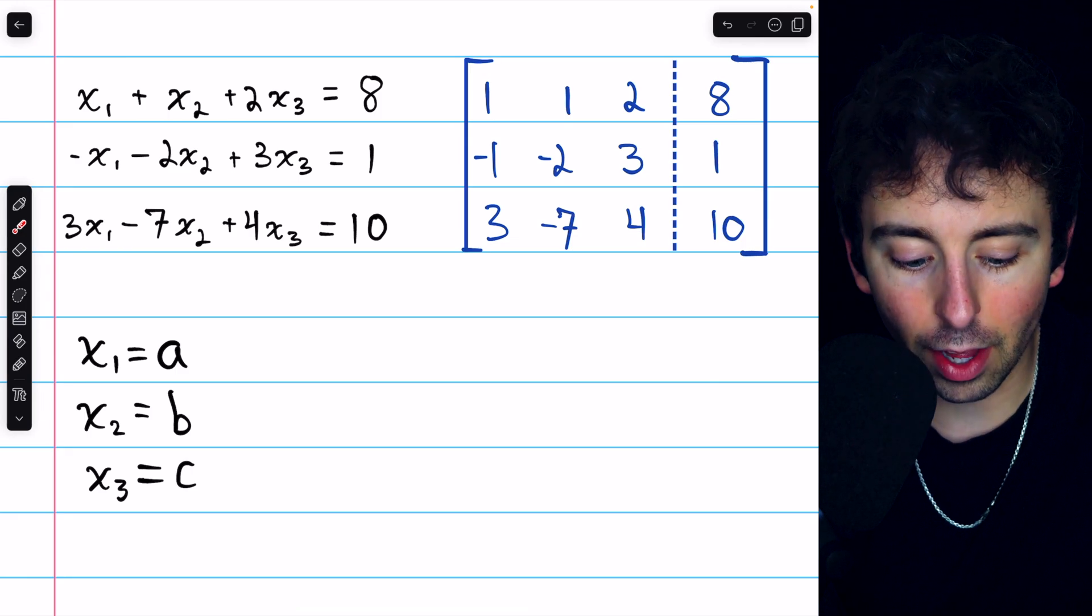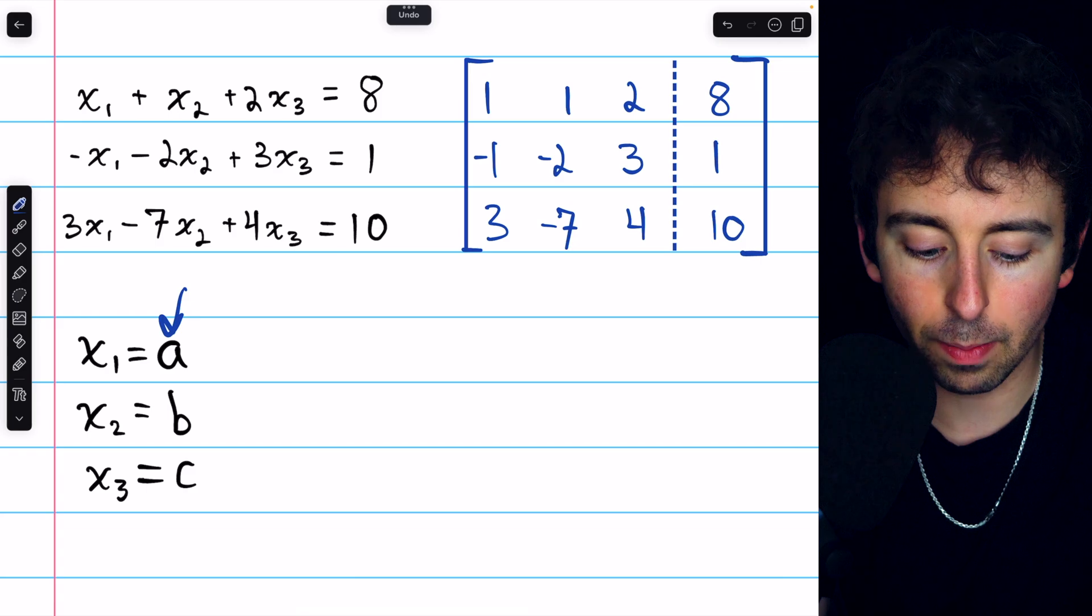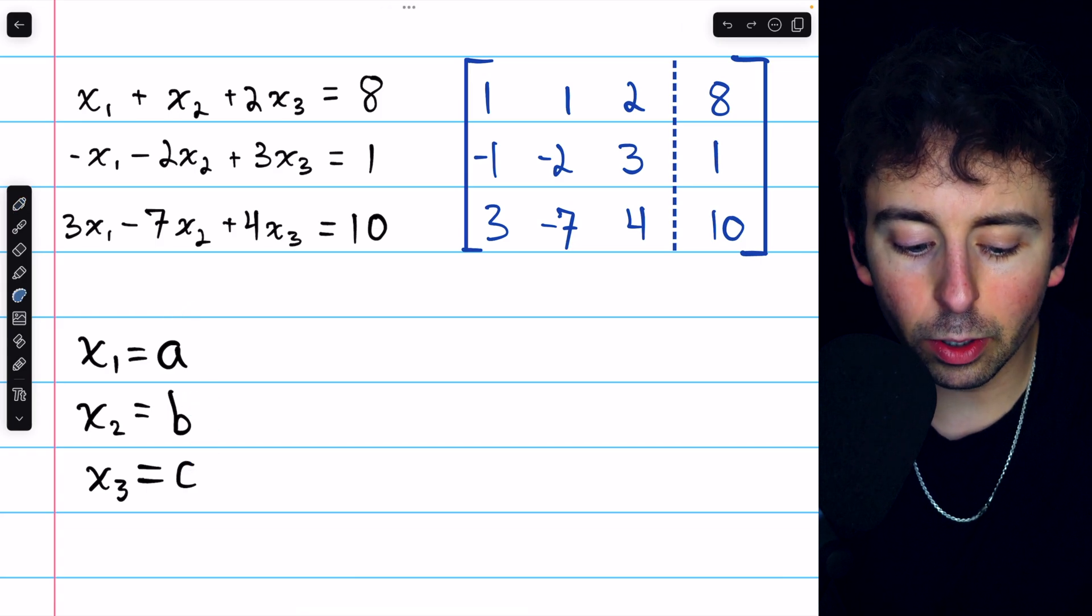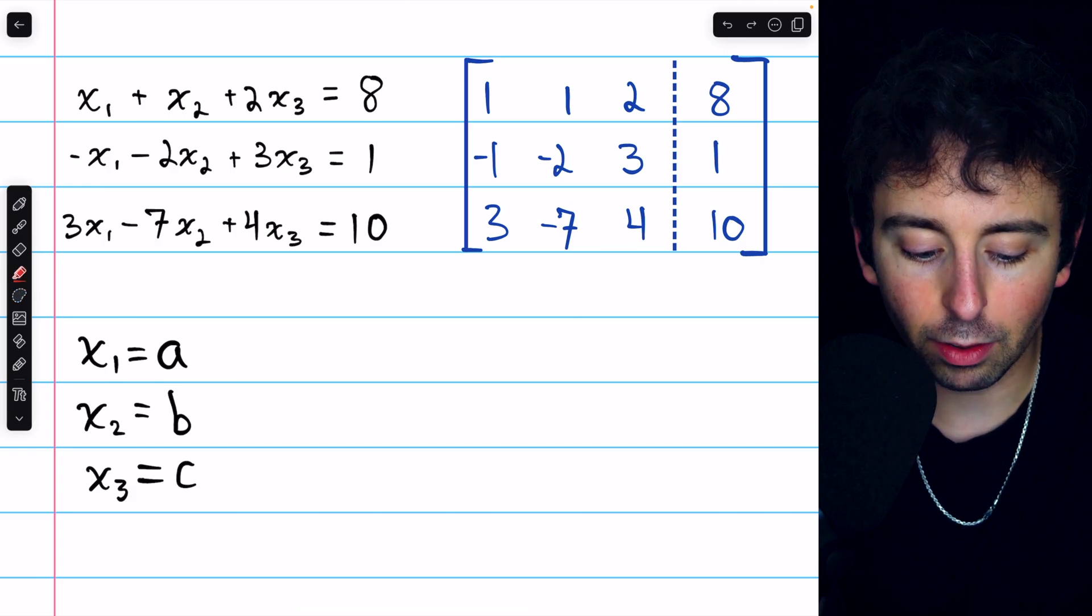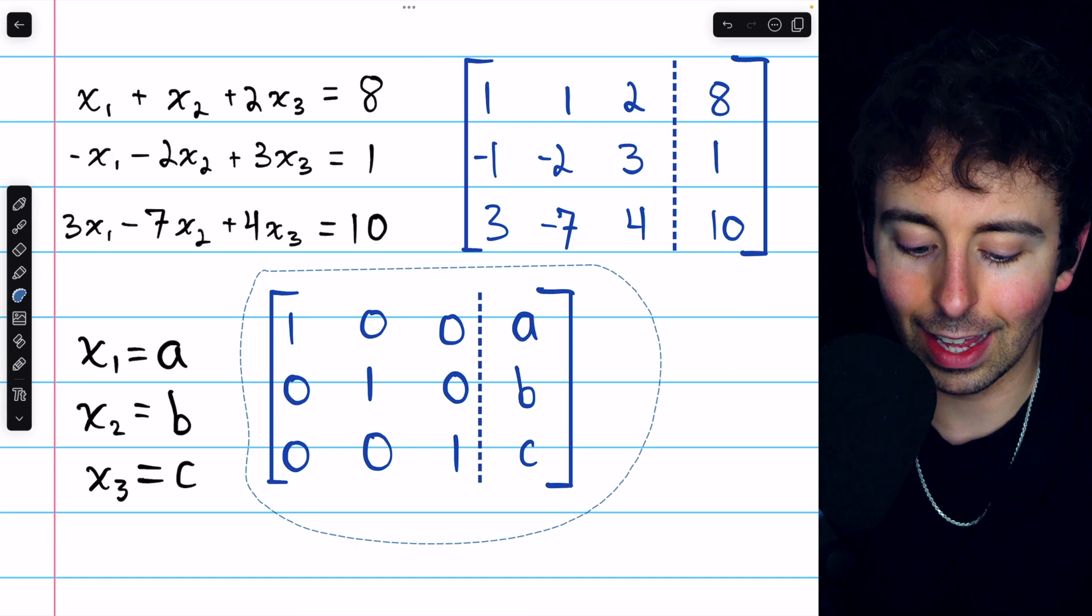So at the end of all this, we should have three equations like this: x1 equals some number, x2 equals some number, and x3 equals some number. And if we were to write an augmented matrix for this system of three equations, it would look like this.